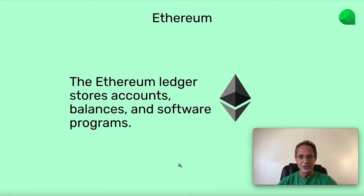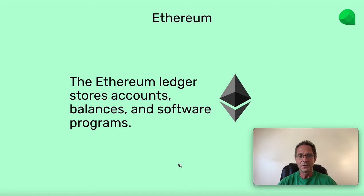The Ethereum ledger stores accounts, balances, and software programs. These software programs are normal software programs that developers can create and send to the network, and once they are sent to the network, they become decentralized. They can create apps inside the network, and that's why Ethereum is programmable.